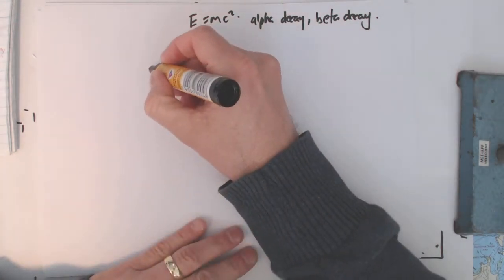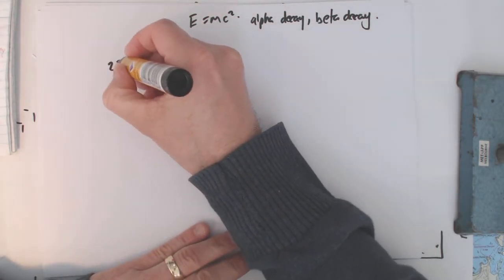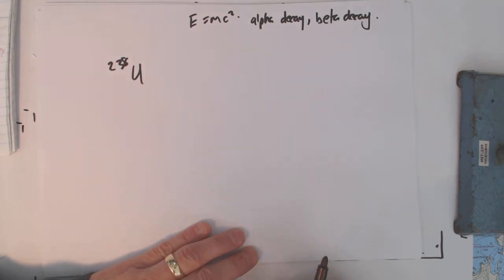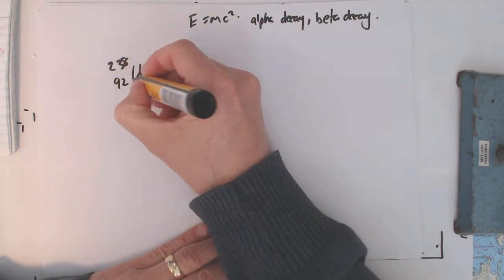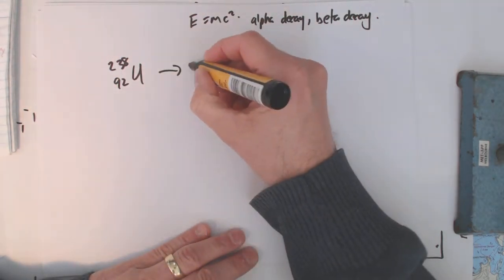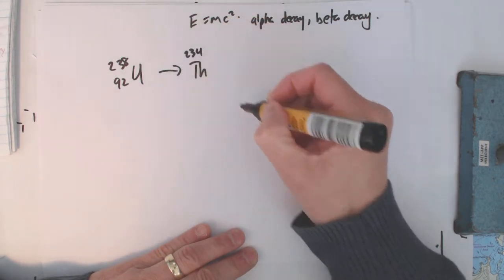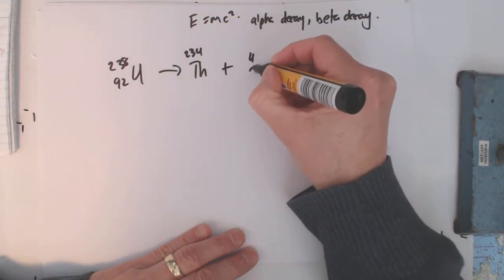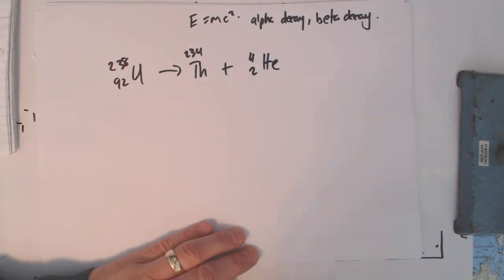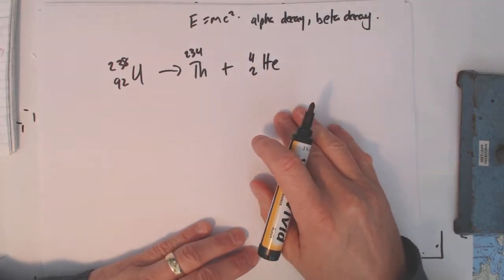Let's have a look at a couple of actual reactions. Uranium-238, that's the non-radioactive uranium. Uranium is 92. If it breaks down to thorium, which is 234, and helium, then what we've actually got there is an alpha particle.